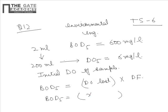Initial DO is let us say x, and final DO, that is final dissolved oxygen at the end of 5 days, is 6. And the dilution factor is 200 ml divided by 2, that is the initial volume.